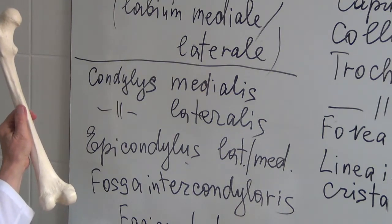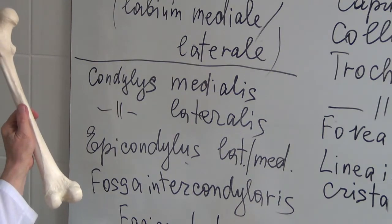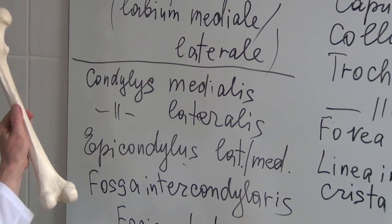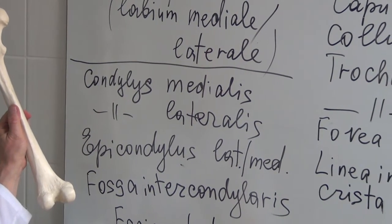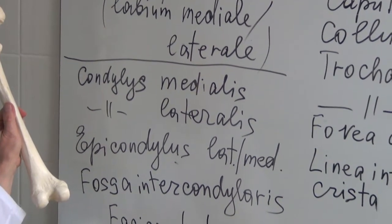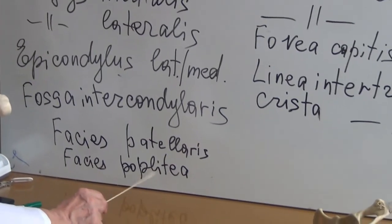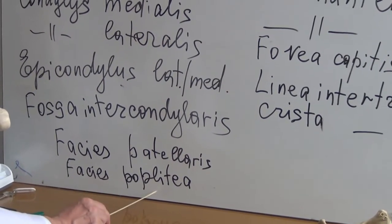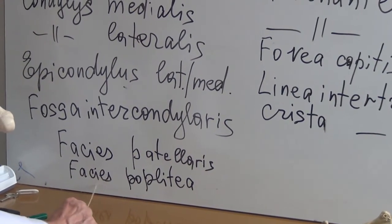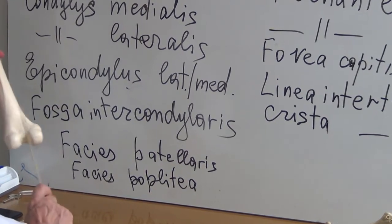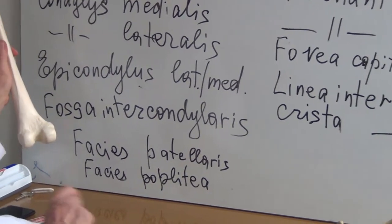On the distal epiphysis we can find the facies poplitea — here it is — located on the most inferior written portion of the posterior surface.